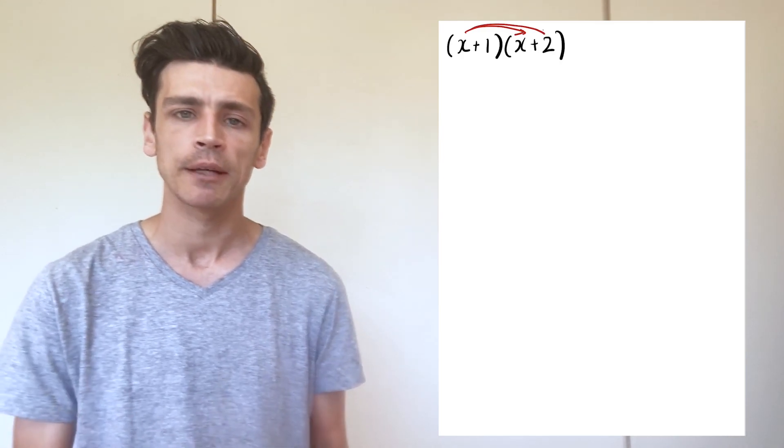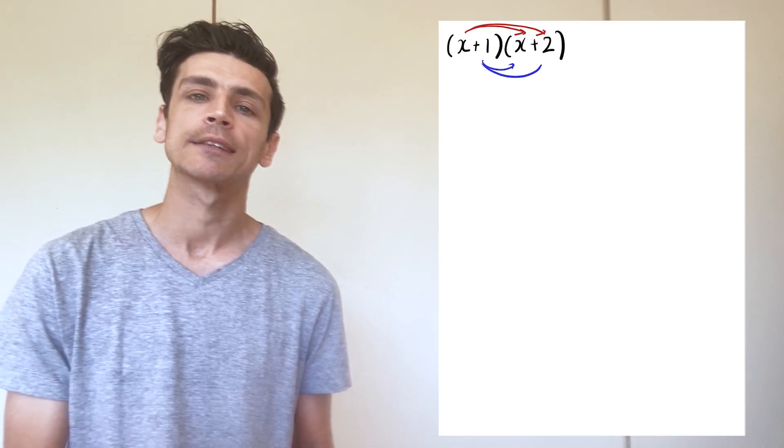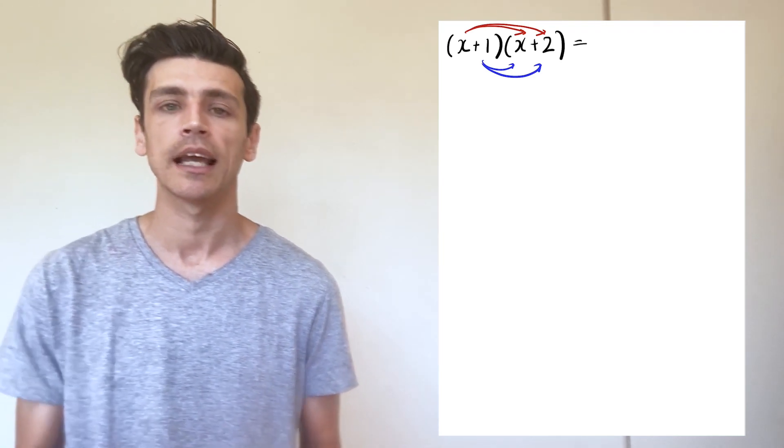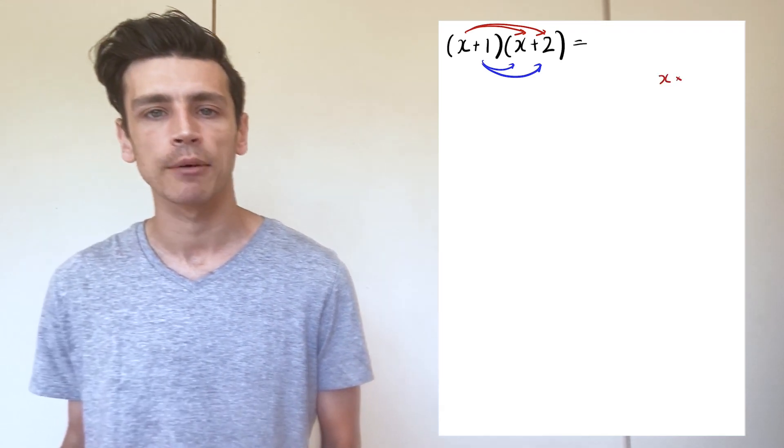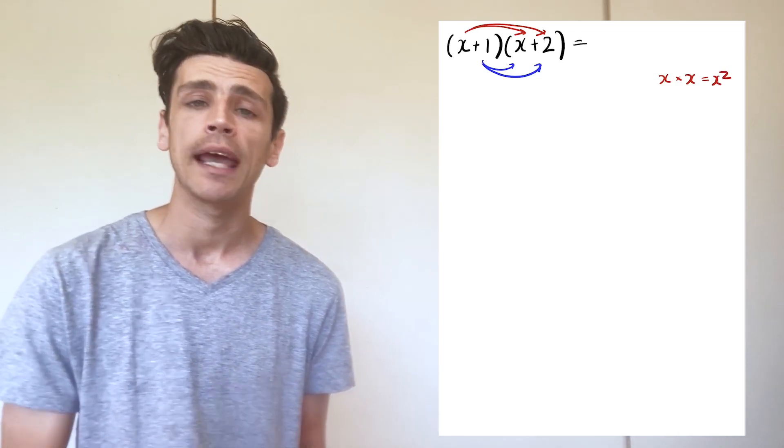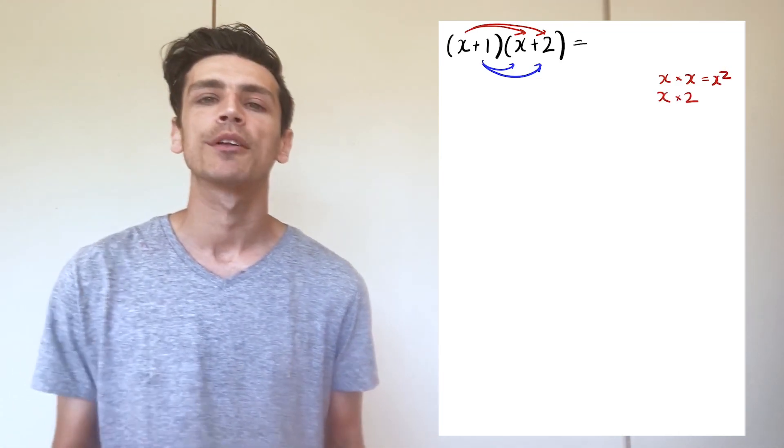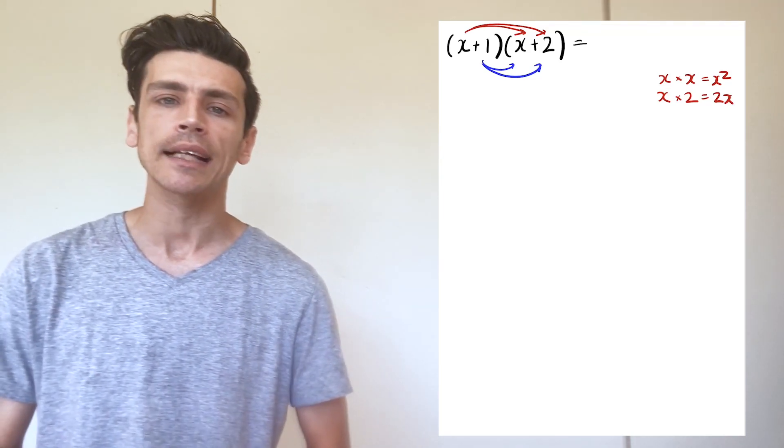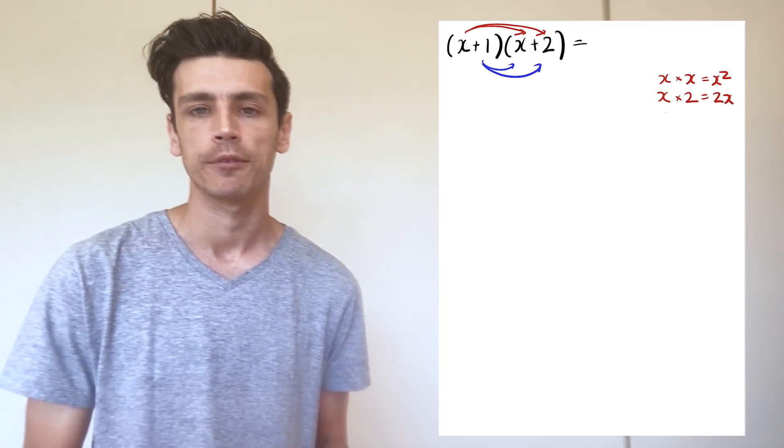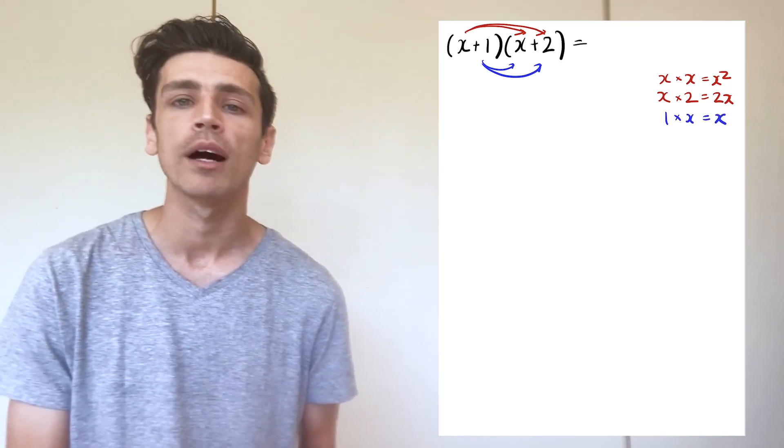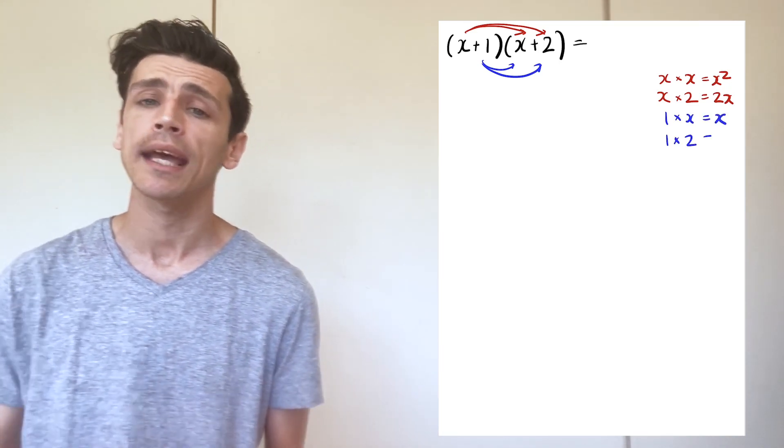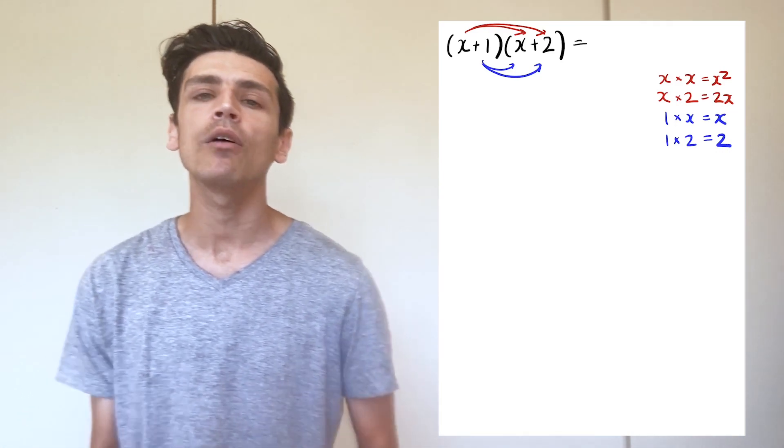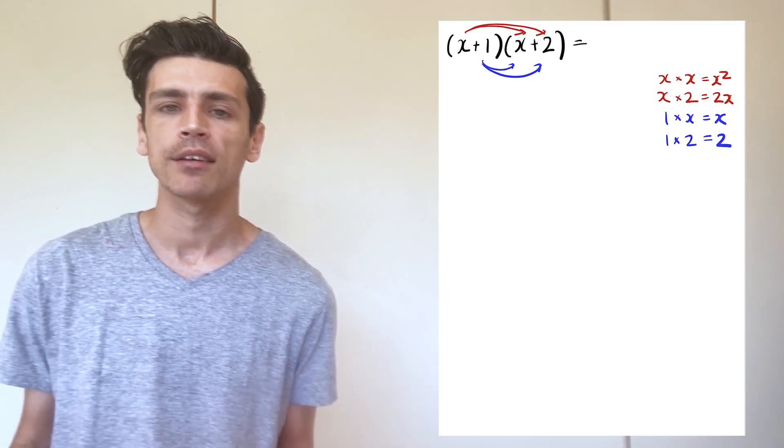For example, we would start off with x from the first bracket and multiply it by x, so x multiplied by x would give me x squared. Then I do x multiplied by positive 2, which gives me 2x. Now I do the exact same process with positive 1 from my first bracket, so positive 1 multiplied by x gives me x, and positive 1 multiplied by 2 gives me positive 2.